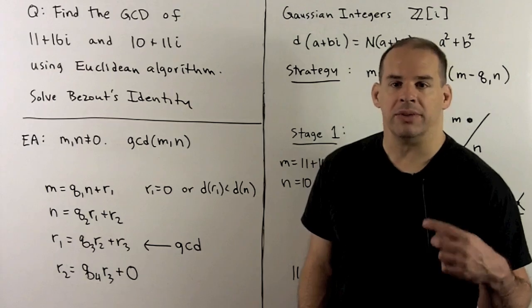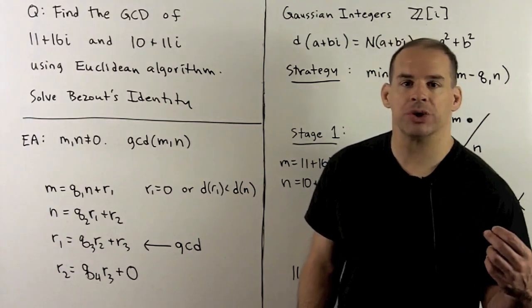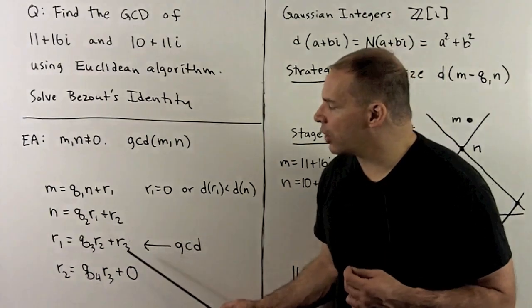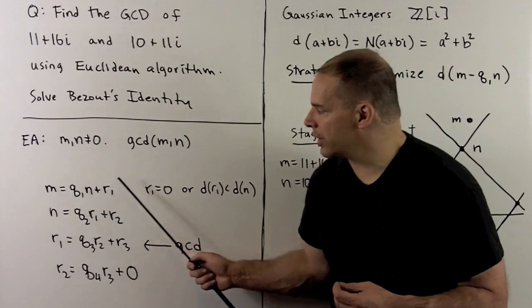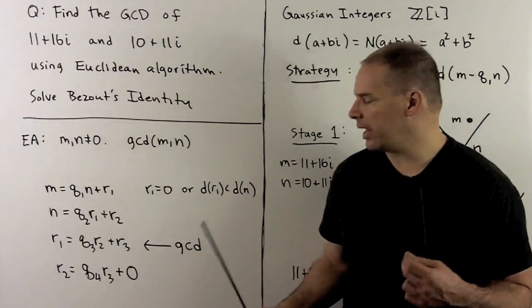For the Euclidean domain, we have the d function. This carries the non-zero elements to the non-negative integers. Then we have the Euclidean domain property. It says I can always solve for q and r in the equation m equals qn plus r, where either r equals zero or d of r is strictly less than d of n.